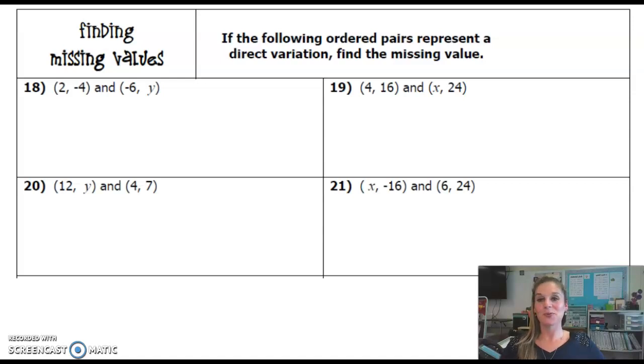Hey 7th graders! We are going to move on to figuring out a missing value, an unknown value, when we are given the information that we do have direct variation. So the direction says if the following ordered pairs represent direct variation, find the missing value.